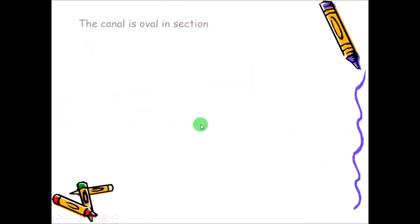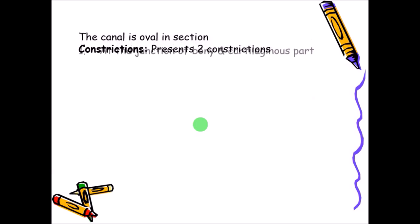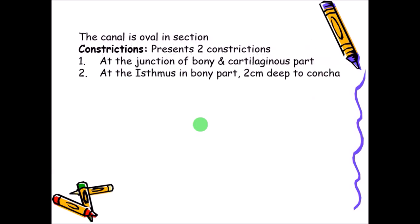The canal is oval in cross-section rather than round. There are two constrictions: one at the junction of the cartilaginous and bony parts where the lateral one-third meets the medial two-thirds, and a second constriction which is the narrowest part called the isthmus. The isthmus is approximately two centimeters deep from the concha. The total length is 2.4 centimeters.